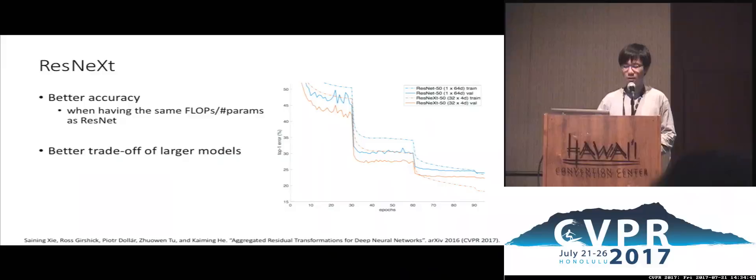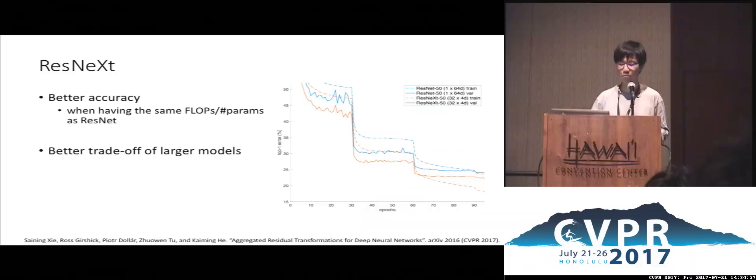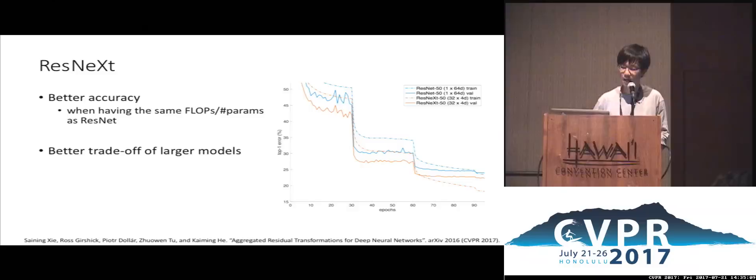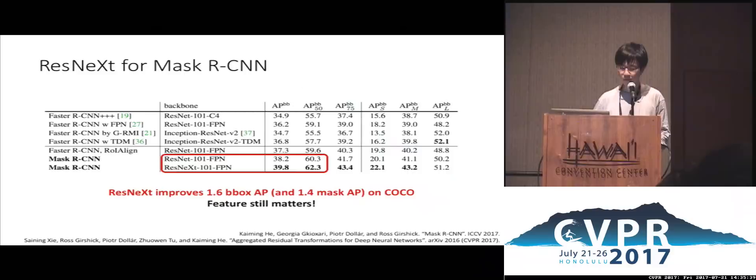The idea of uniform multiple-branching is very successful. We observed better accuracy than ResNet while manually keeping the number of FLOPs and parameters the same as the original ResNet. The blue lines are original ResNet, the red lines are ResNext, with dashed lines for training error and solid lines for validation error. ResNext achieves a better trade-off when training larger models, and generalizes well to more complicated recognition tasks such as object detection and instance segmentation.